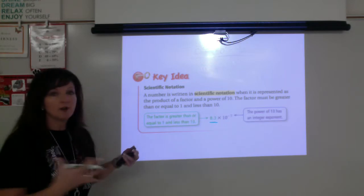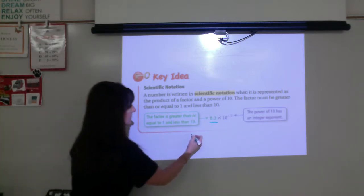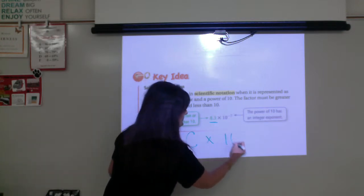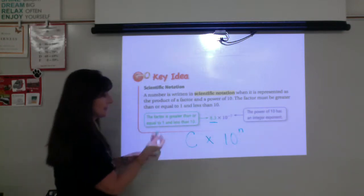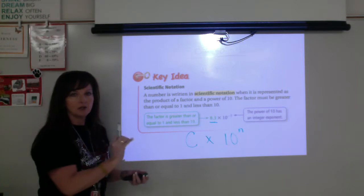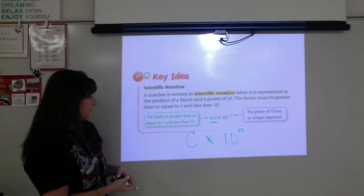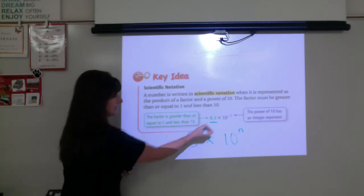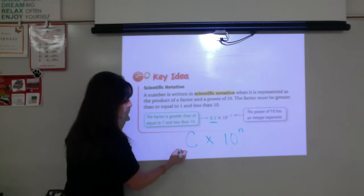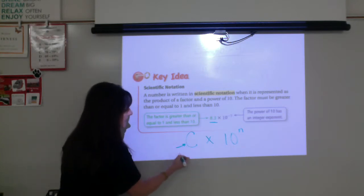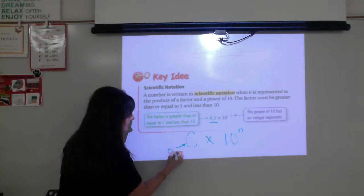And if you look at the front of your note-taking packet, you can see that I summarized and put c times 10 to the n. So this is the basic notation for scientific notation because this c is this decimal factor that we're talking about. And so basically the rules for this is that c is greater than or equal to 1 and c is less than 10.